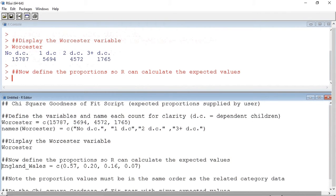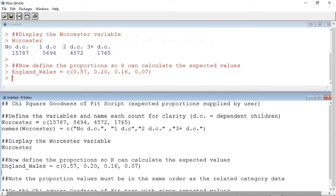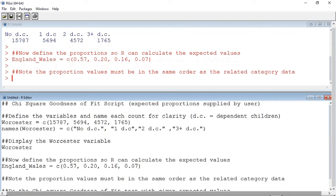We're now going to define the proportions so R can calculate the expected values. I'm putting this in a variable called England-Wales. You must note that the proportion values must be in the same order as the category data they relate to.